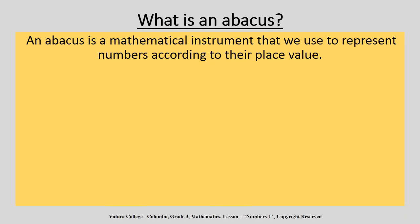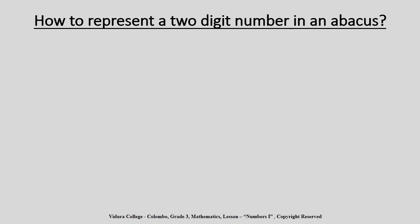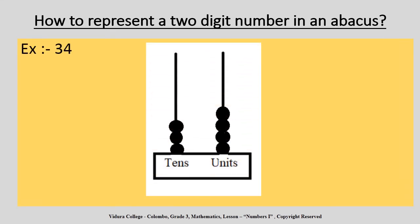Do you know what is an abacus? An abacus is a mathematical instrument that we use to represent numbers according to their place value. The abacus we are using to represent two-digit numbers has two place values: units place and tens place. Look at the example given — they have represented number 34 in an abacus. There are four balls drawn in the units place to represent the four units in 34, and three balls drawn in the tens place to represent three tens in 34.